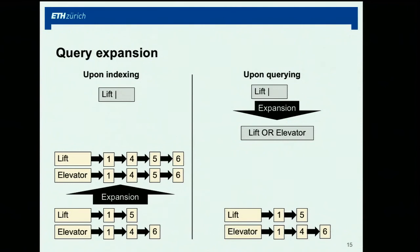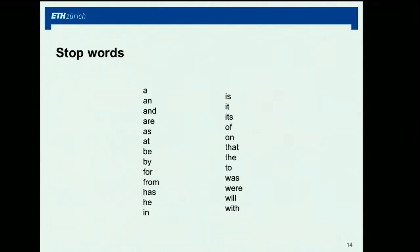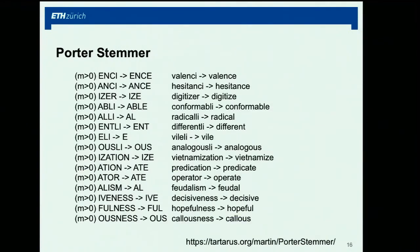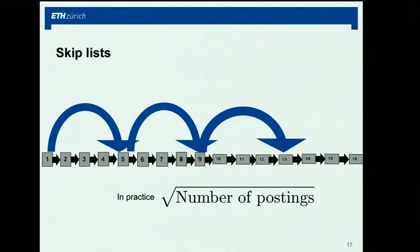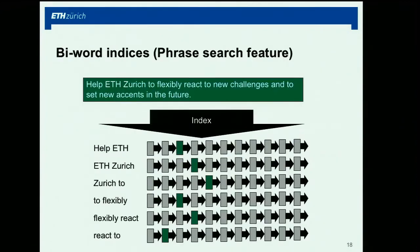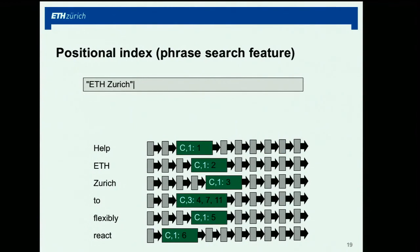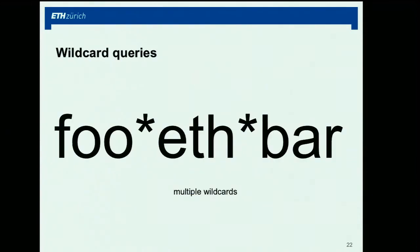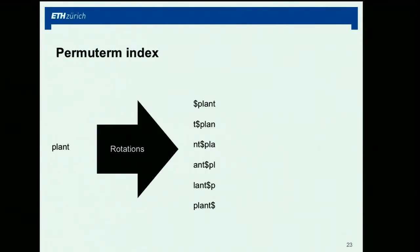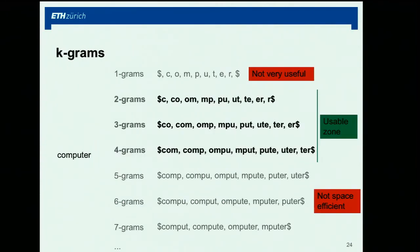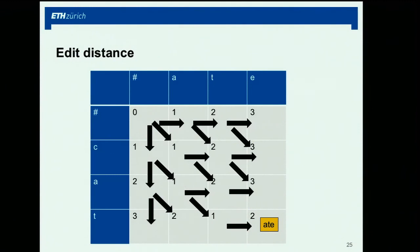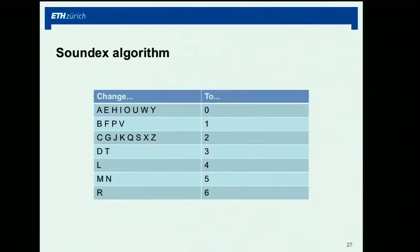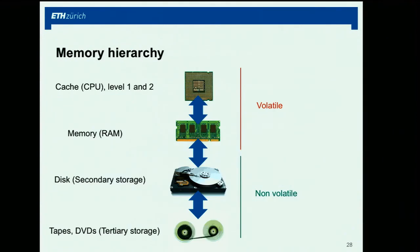To make retrieval more efficient: stop words that we ignore, query expansion where 'lift' and 'elevator' are treated as equivalent — either by expanding the index or expanding the query. We saw the Porter stemmer for simplifying and grouping words into classes. We had skip pointers, biword indices, positional indices keeping the position of terms, search structures like B-trees and hash tables, wildcard queries with the permuterm index, and k-grams for tolerant retrieval and spell correction using edit distance.